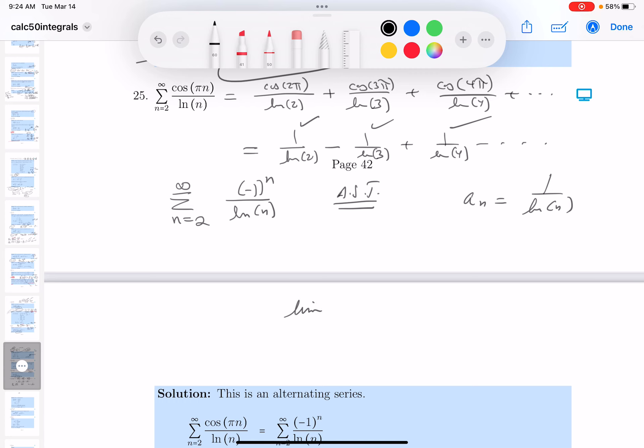I need to show the limit. Maybe it's just the necessary state. n goes to infinity of a_n. Well, that's going to be 0. That's a good check. We got that one done.